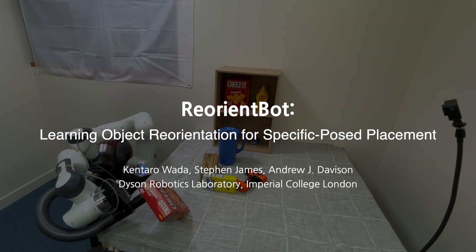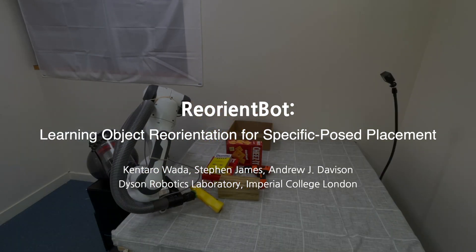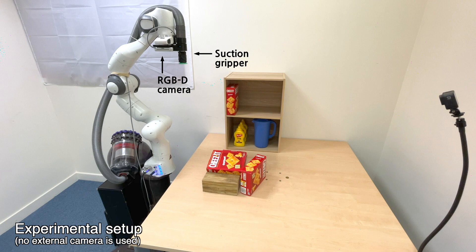We present efficient dynamic object reorientation for regrasping to achieve specific pose placement. Our system estimates object poses for planning using an onboard camera.